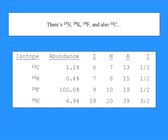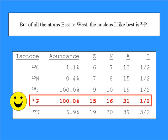There's 15N, 39K, 19F, and also 13C. But of all the atoms, east to west, the nucleus I like best is 31P.